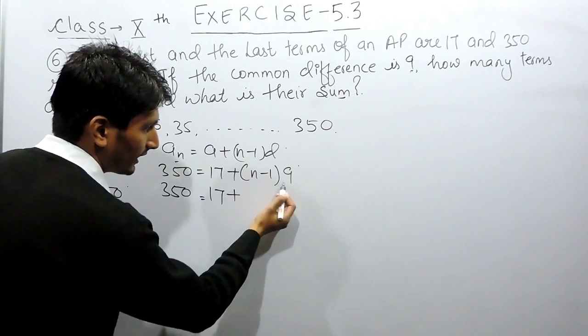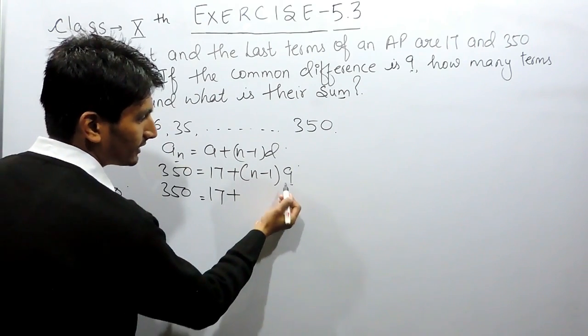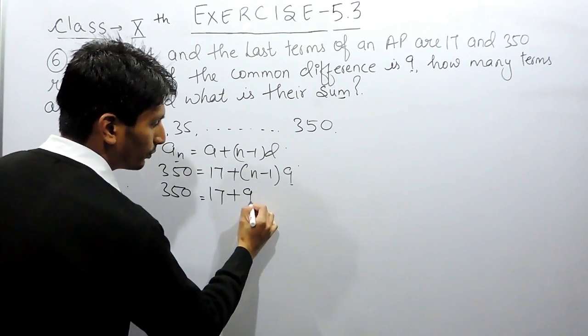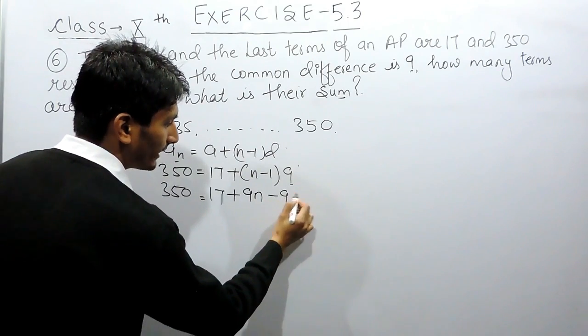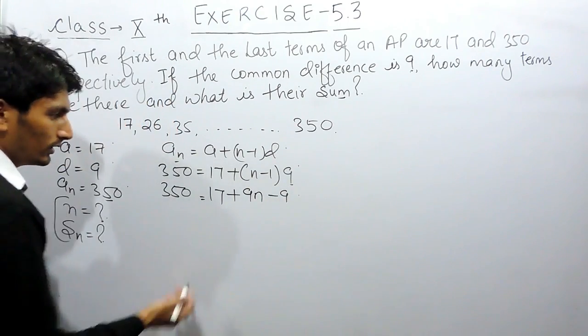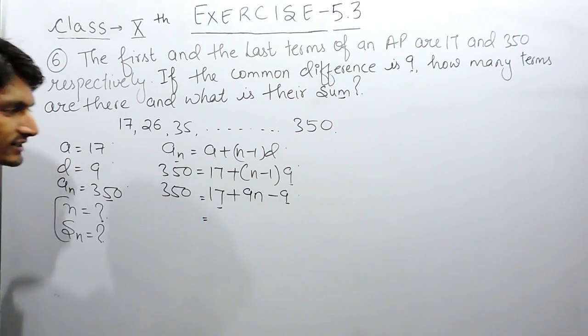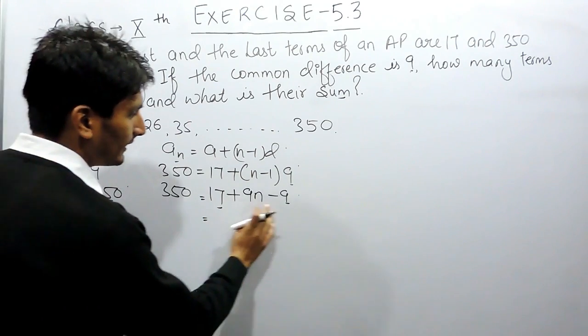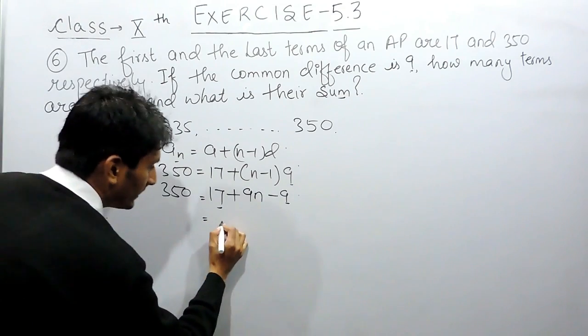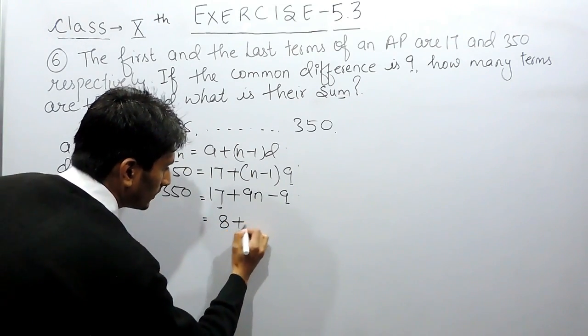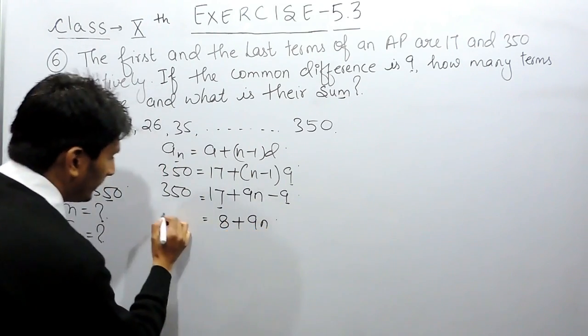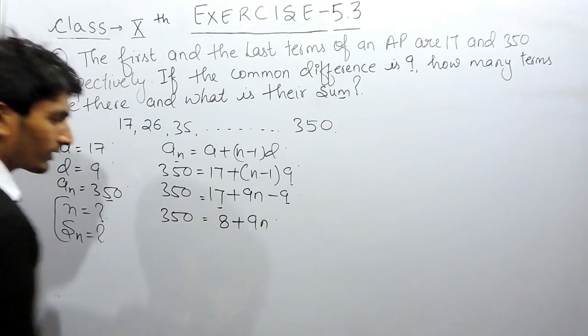Now if I have to open this bracket, I have to multiply this 9 with both n as well as with minus 1. So, further solving this, these two are constants can be solved. So, 17 minus 9 is 8 and this is 9n and this is 350.